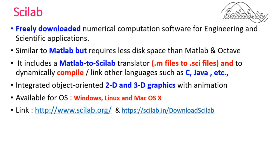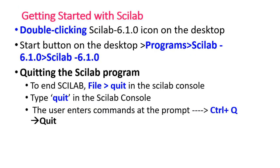To download the latest version of Scilab, go to www.scilab.org or scilab.in/downloadscilab. Once installation is complete, double-click the Scilab 6.1.0 icon on your desktop. Alternatively, go to Programs, select Scilab 6.1.0, and choose the appropriate version.